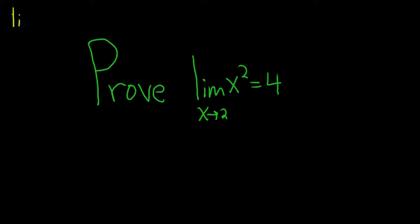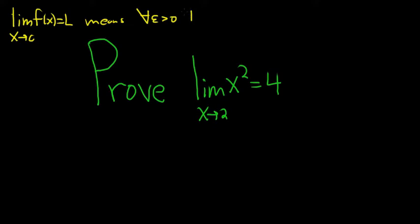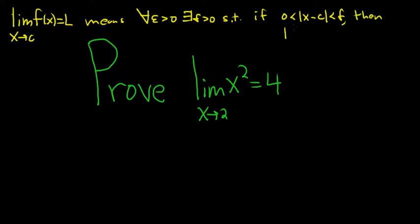When we write the limit as x approaches c of f of x equal to L, this means — L is a real number — for all epsilon greater than 0 (the symbol here means 'for all'), there exists a delta greater than 0 such that whenever the distance between x and c is less than delta, in other words whenever x is close to c, then f of x is close to L, so the distance between f of x and L is less than epsilon.